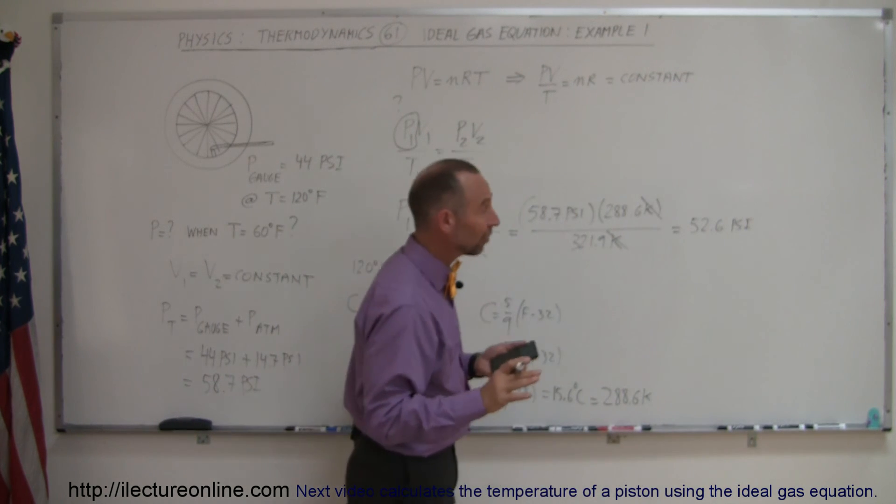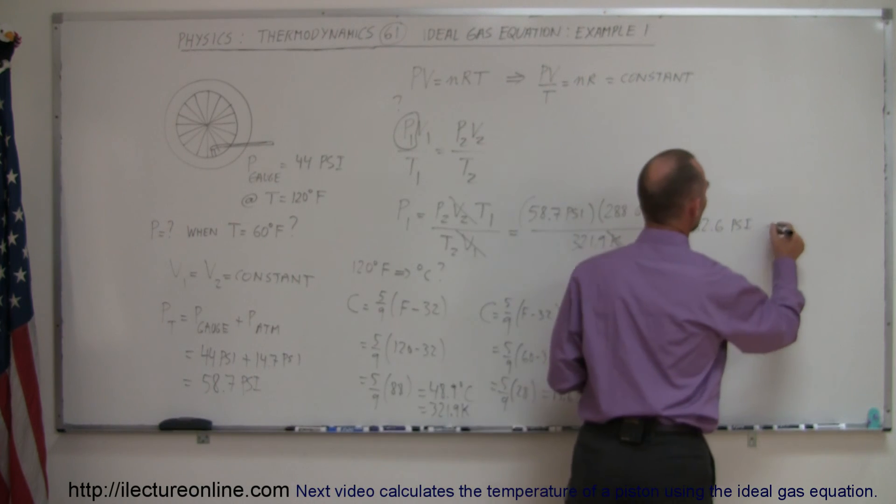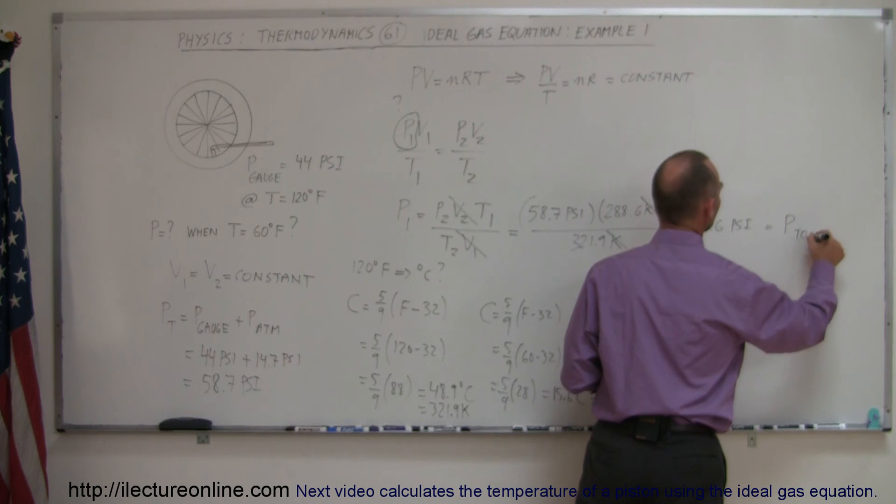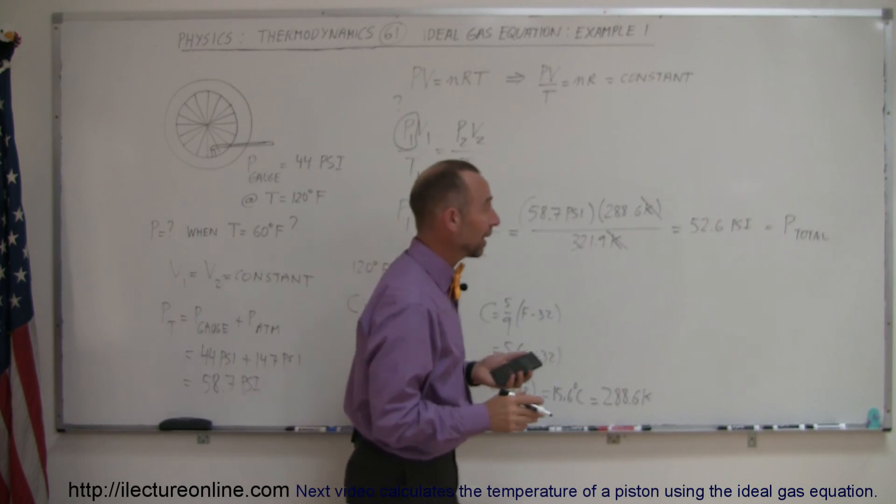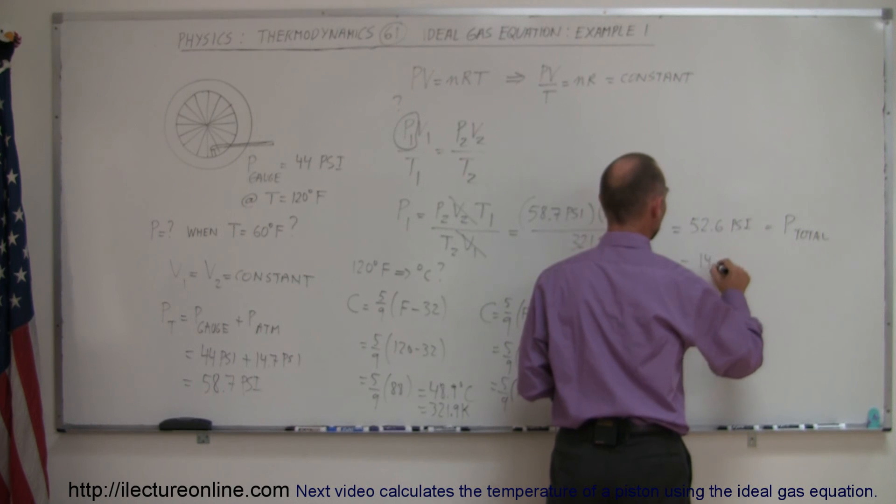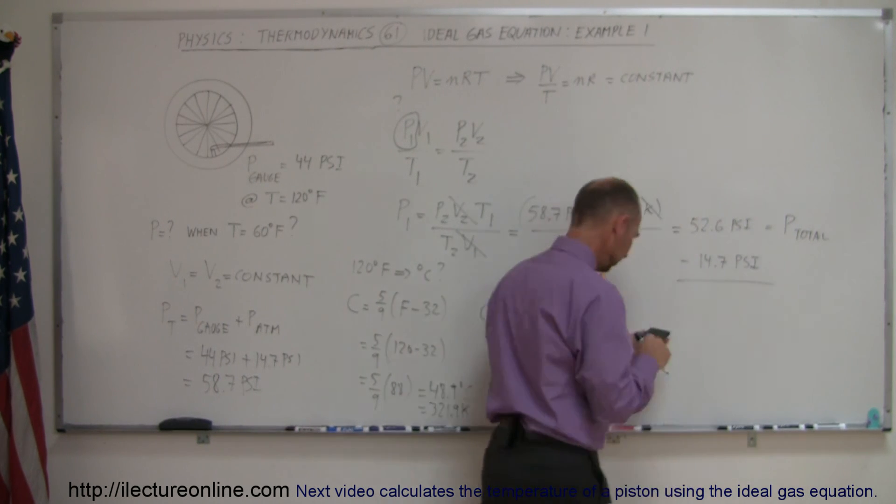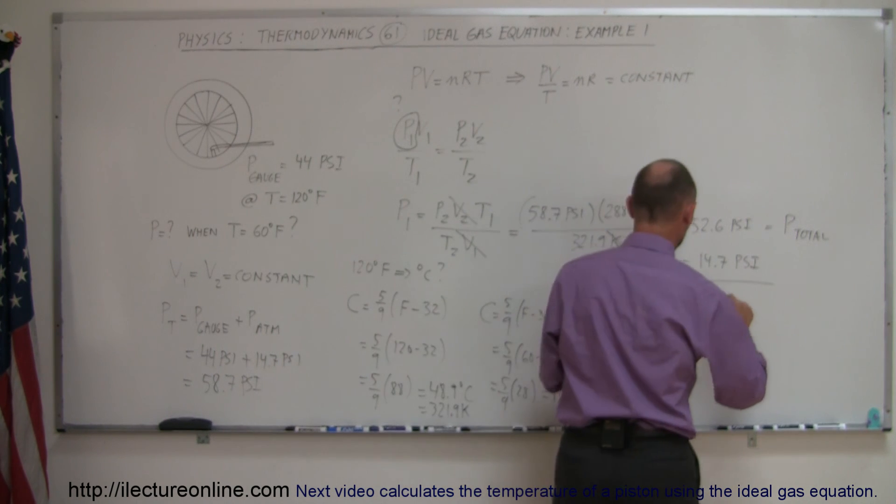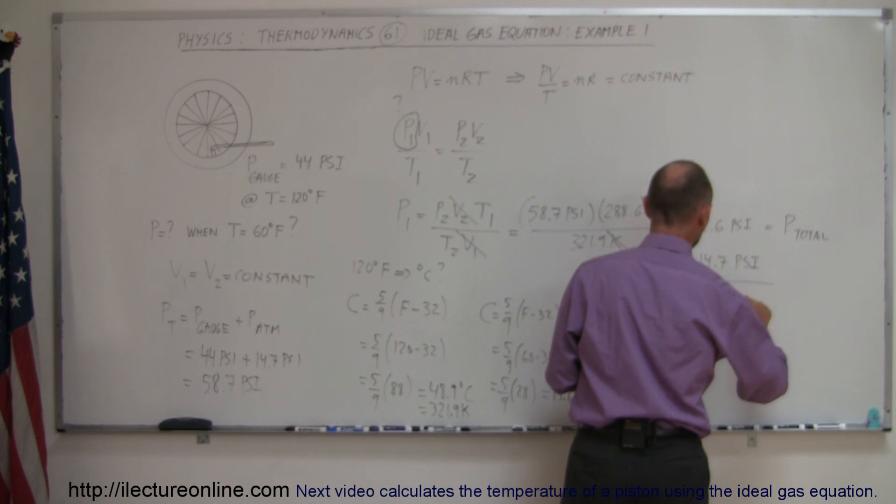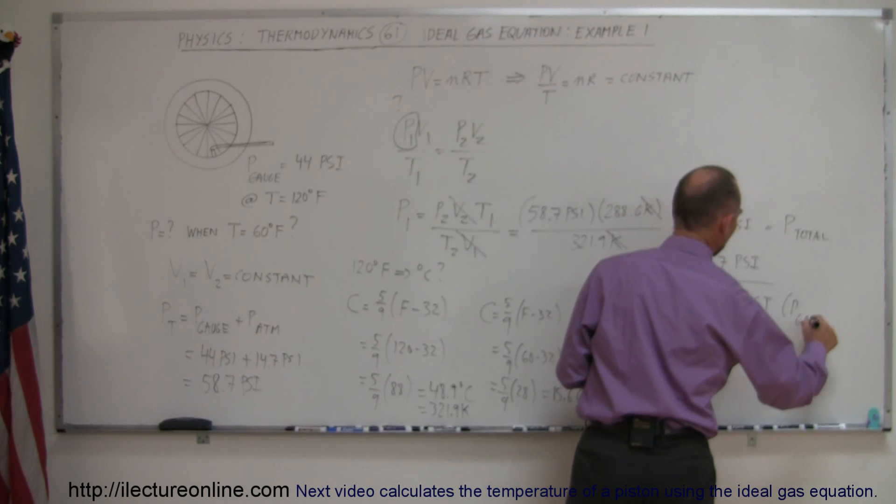That's not the gauge pressure. That's the total pressure. So this is equal to P total. So we have to subtract 14.7 from that. So minus 14.7 psi for the atmospheric pressure. That will give us 37.9 psi. And that would be P gauge initially.